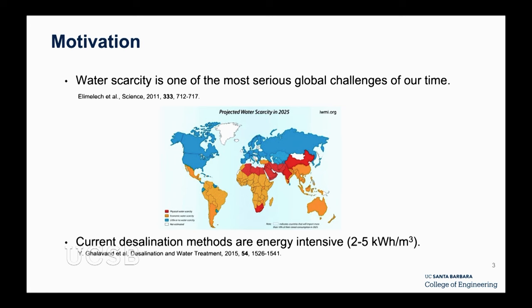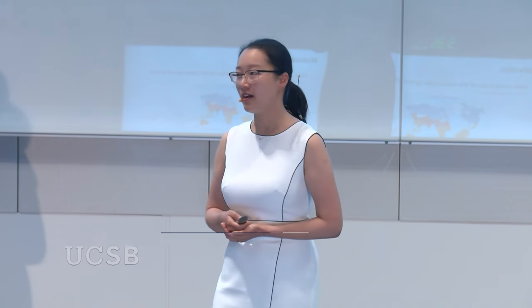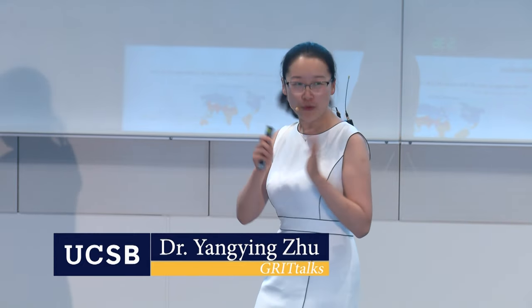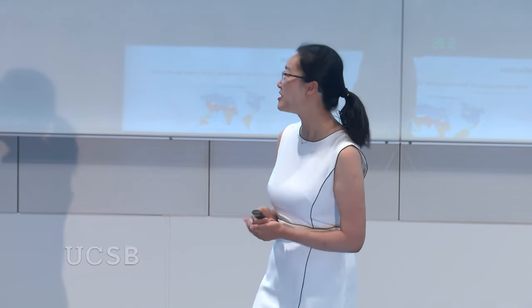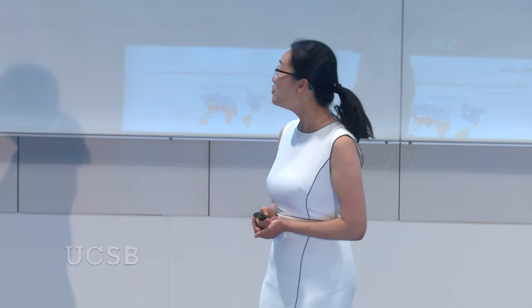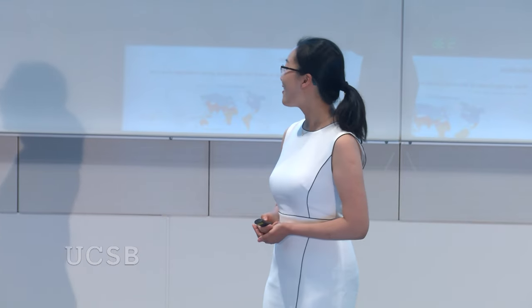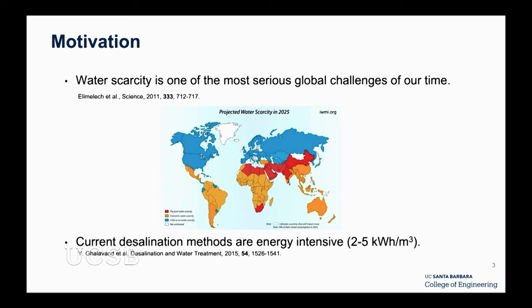If you think about current desalination technologies — reverse osmosis, multi-stage flash, thermal flash — most of them are very energy-intensive. It requires about two to five kilowatt-hours of energy to produce one cubic meter of fresh water. In many developing countries, energy costs money, so we want to provide fresh water with minimal energy input.